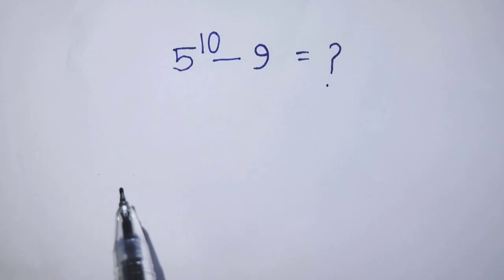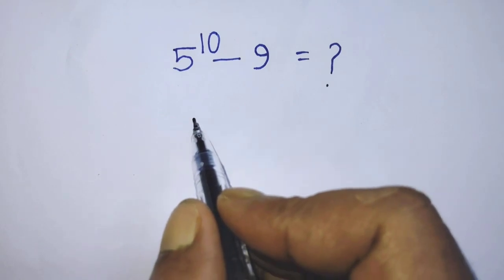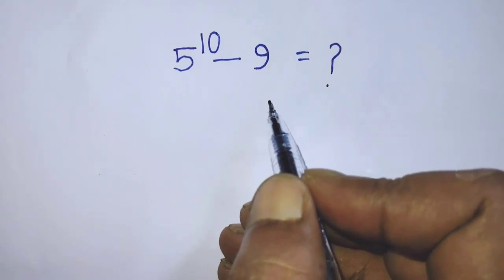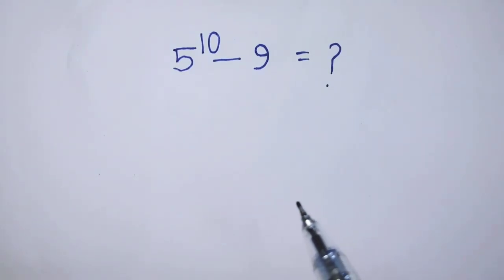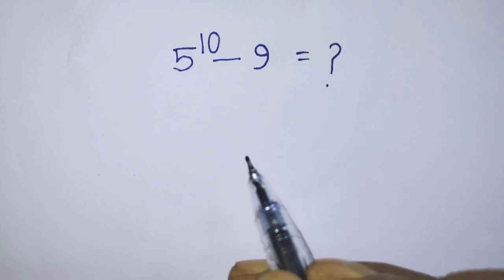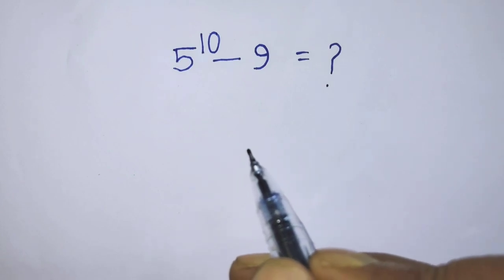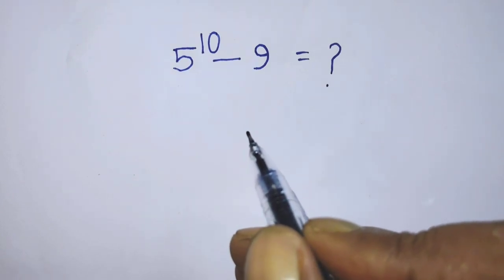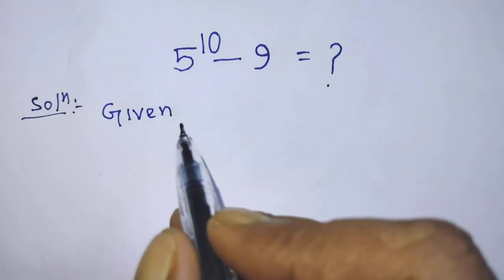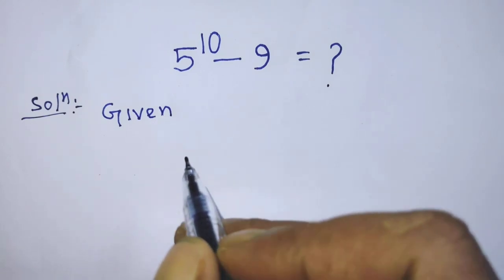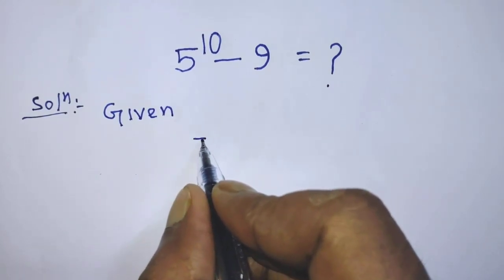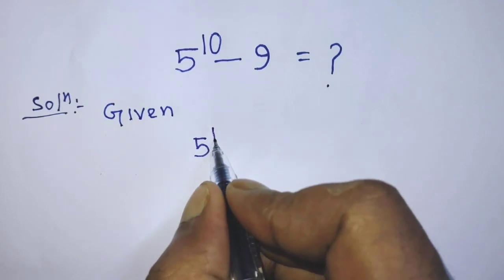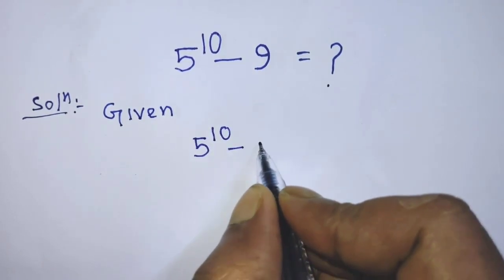Hello guys, welcome. Today we'll solve this math problem which is 5 to the power 10 minus 9. I'm telling you how to simplify this algebraic expression. Our given algebraic expression is 5^10 - 9.